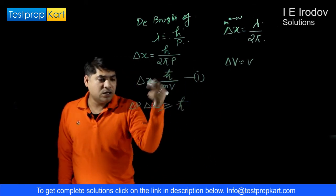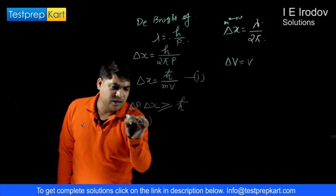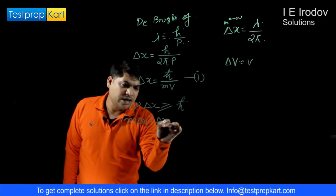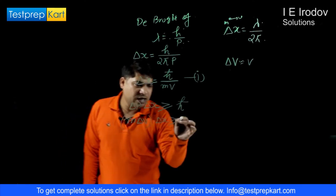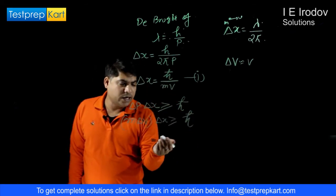Mass is not changing. So we can write m into delta v into delta x is greater than equals to h bar. This is from Heisenberg's uncertainty principle.